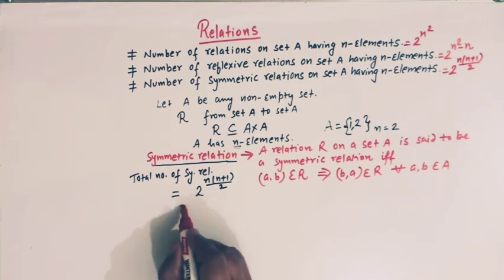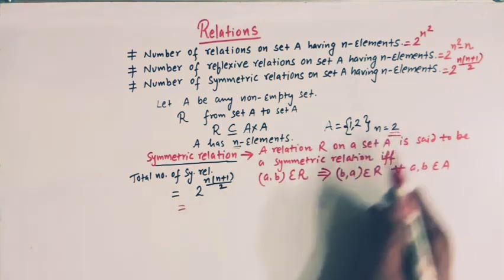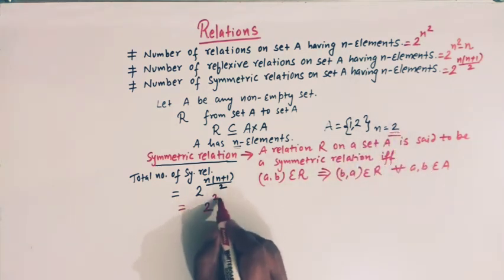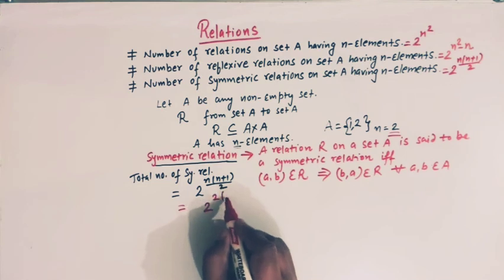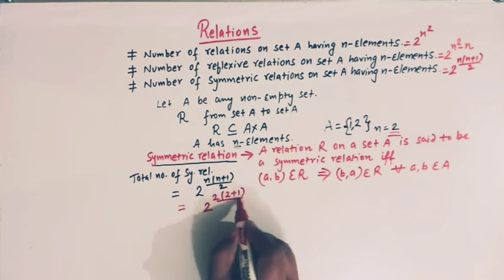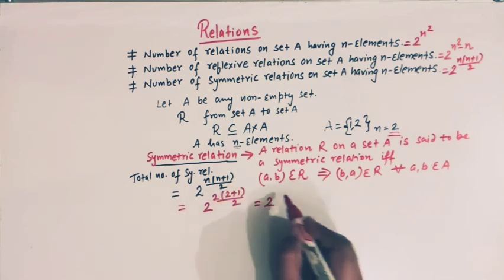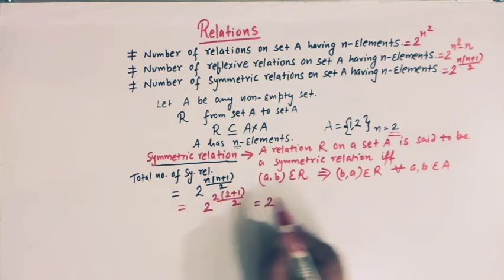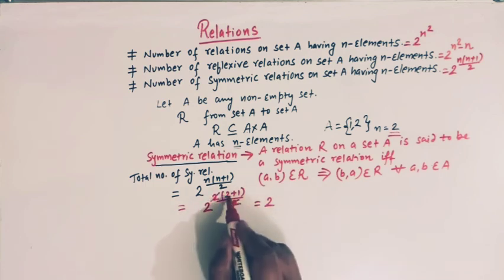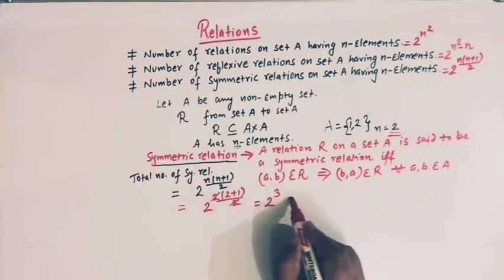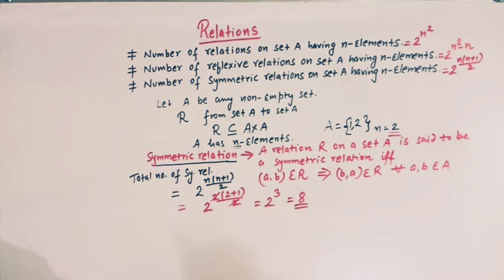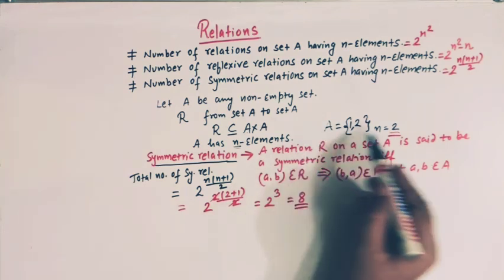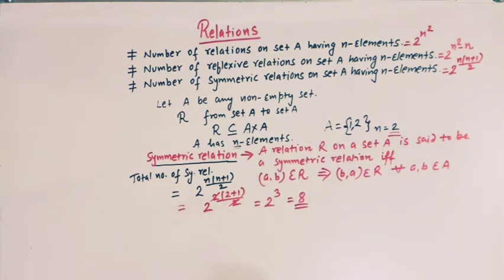The total number of symmetric relations on set A having n elements is given by the formula 2 raised to n(n+1)/2. In this case, n is 2, so we have 2 raised to (2 times 3 divided by 2), which gives 2 raised to 3, that is 8. So the total number of symmetric relations on set A having two elements is 8.